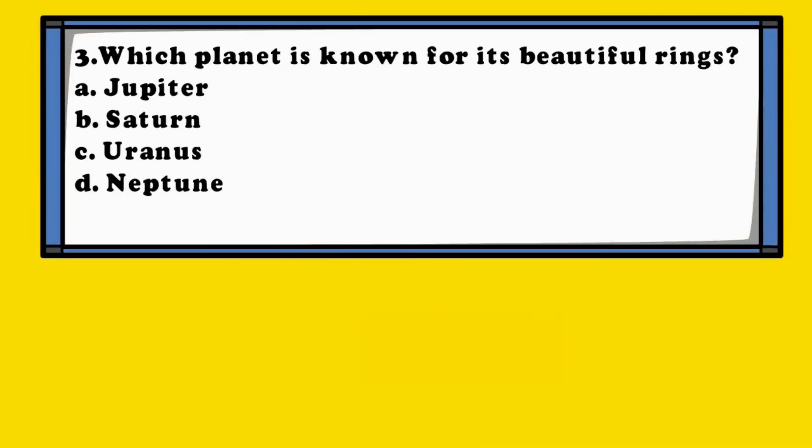Question 3. Which planet is known for its beautiful rings? A. Jupiter, B. Saturn, C. Uranus, D. Neptune.